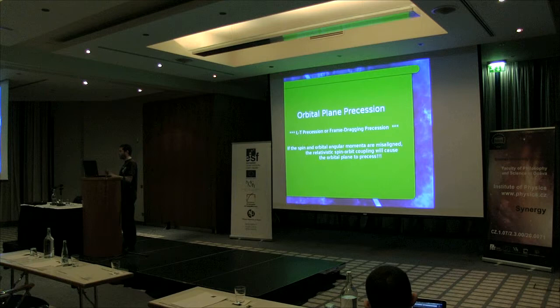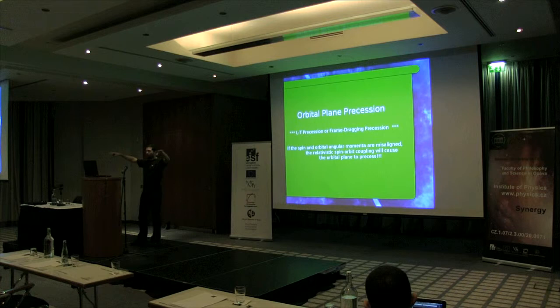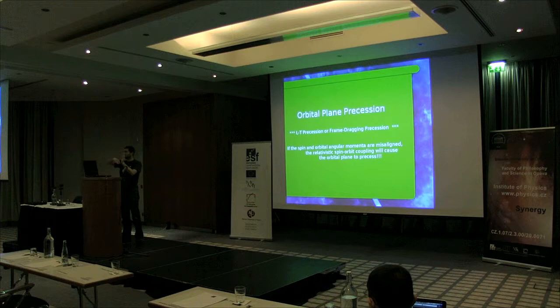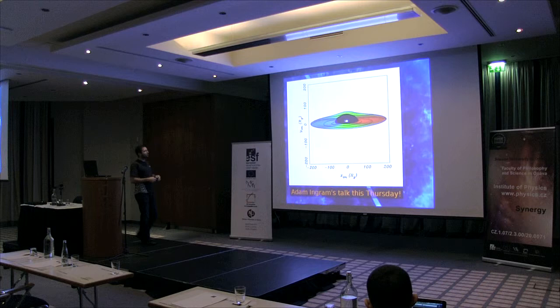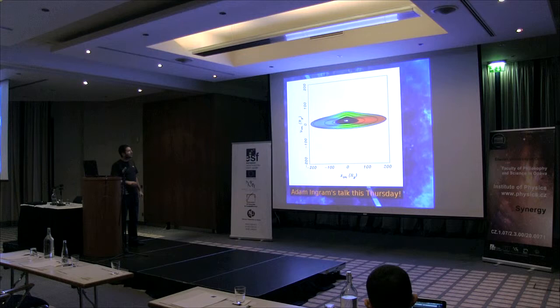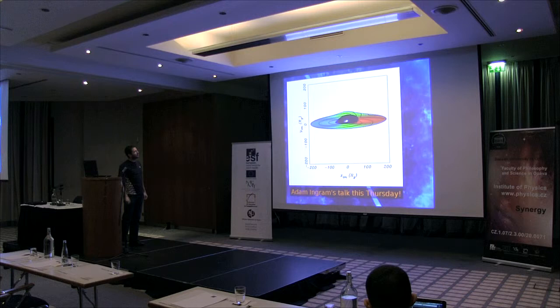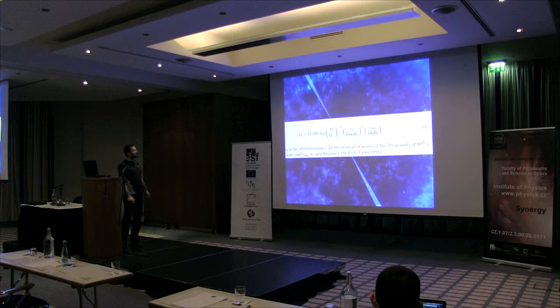Now the third part, which connects everything: Lense-Thirring precession. In Newtonian gravity, mass is the source of gravity, but in Einstein's theory any energy-momentum, including angular momentum, is the source of gravity. What this means is that if you have an accretion disk around a compact object whose spin axis is not aligned with the disk, you expect the disk to start precessing, assuming the spin is not zero. This animation shows a black hole with a 10-degree misalignment between the disk and spin axis, and the inner black region is precessing — that is Lense-Thirring precession.